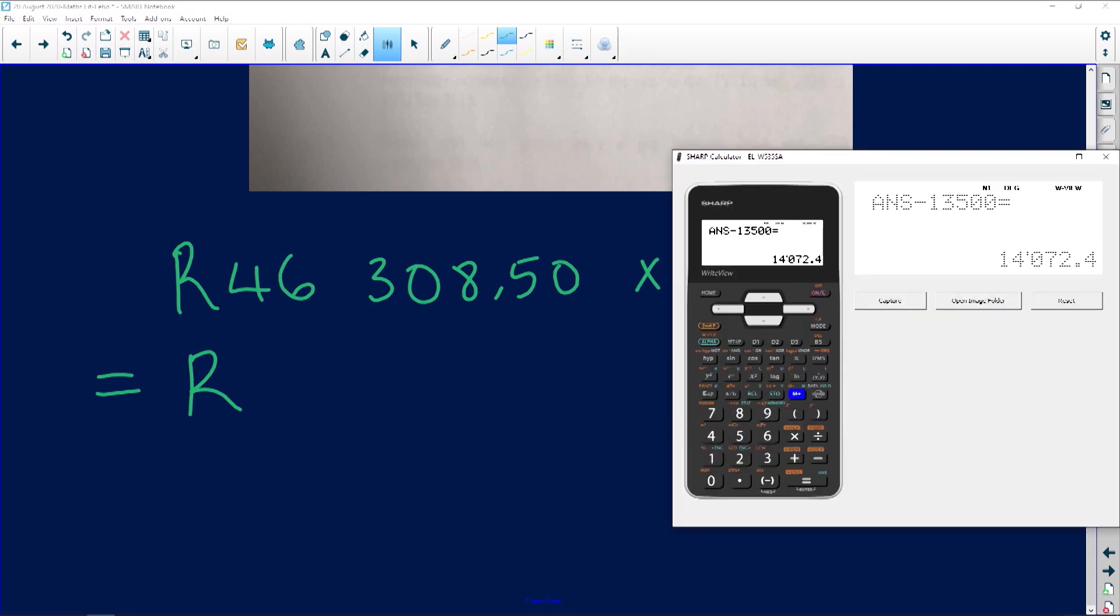So now we know that the monthly taxable income is R46,308.50. We know that annual then means we need to take the amount and multiply it by 12. Let's do that. So we're going to take the amount which is R46,308.50 times 12 because we want annual.